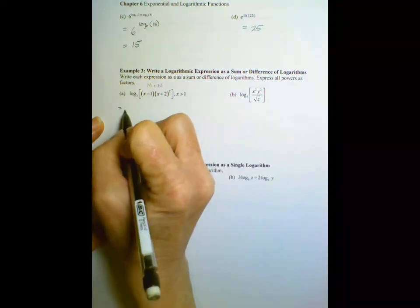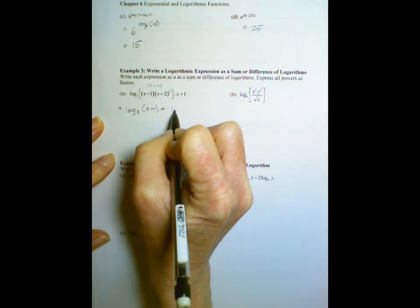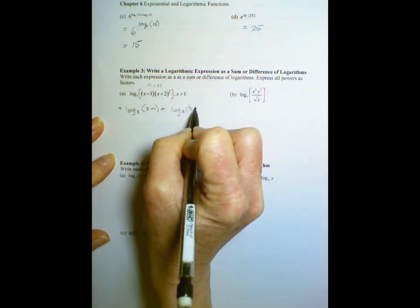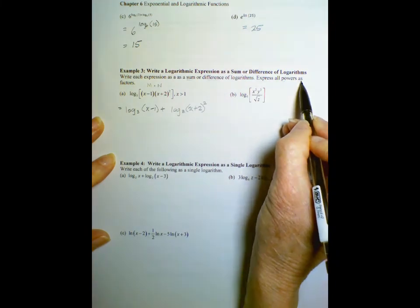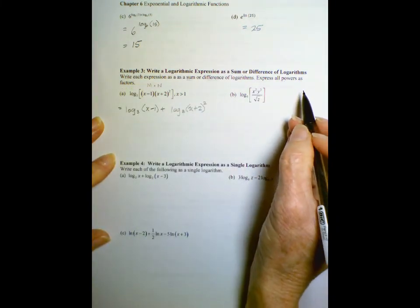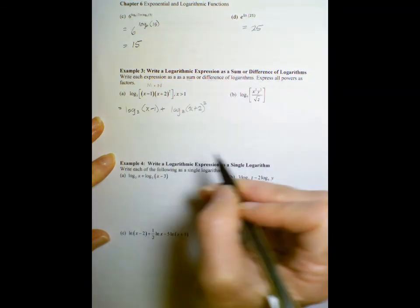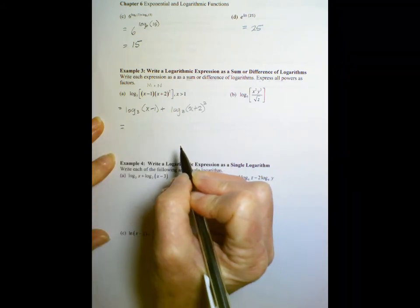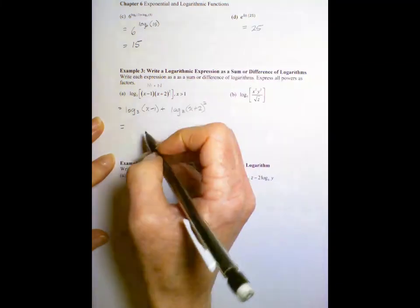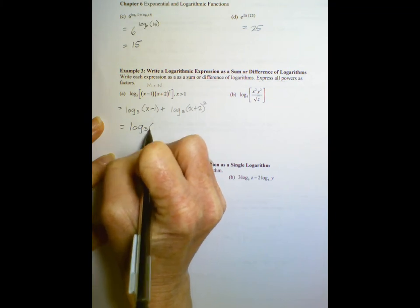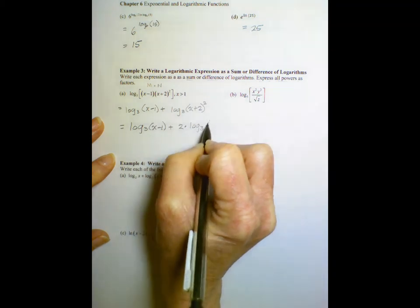So this will be log base 3 of m plus log base 3 of n, and then it says we won't be done until we have expressed all powers as factors. So what does that mean? That means when we have a power we have to change it to a factor. So we saw that before with log base a of m to the r, and the r came around became a factor. So we have log base 3 of x minus 1 plus 2 times the log base 3 of x plus 2.